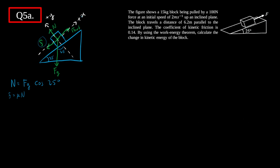To find the total work done, I'll sum up three components: work done by the external force, work done by friction, and work done by weight (gravitational force). Adding all of them together gives the change in kinetic energy.